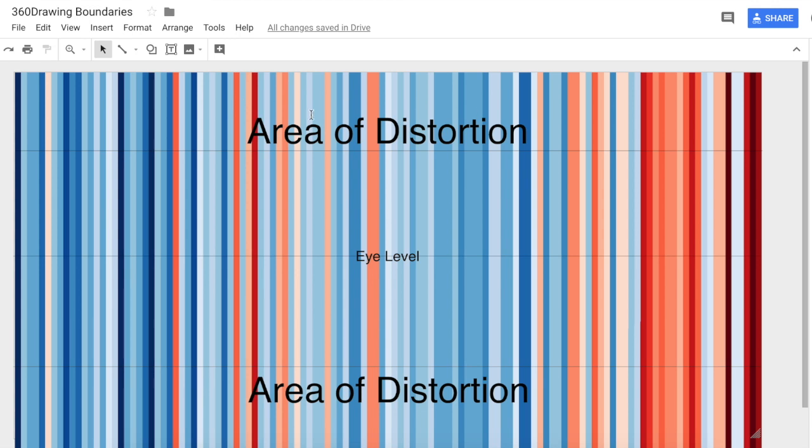The area at the top will become an area of distortion. The area of the bottom will become an area of distortion. But you can actually put drawings and images at eye level, and I'll show you what this looks like.